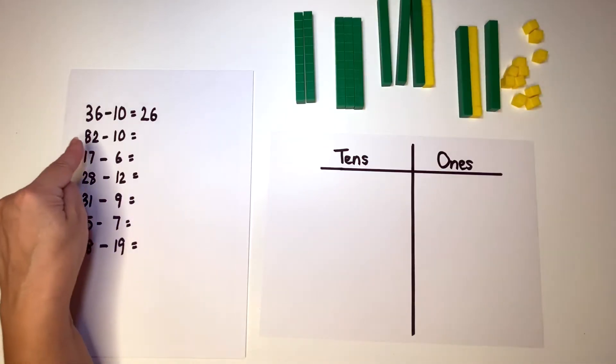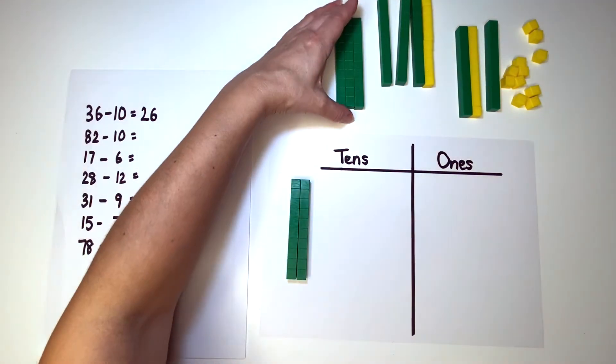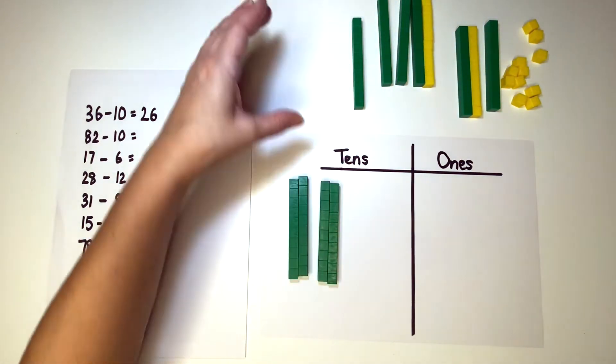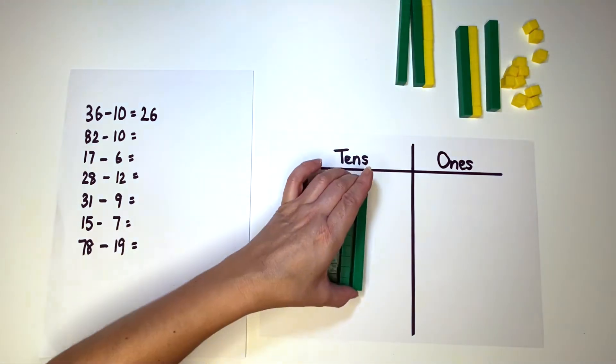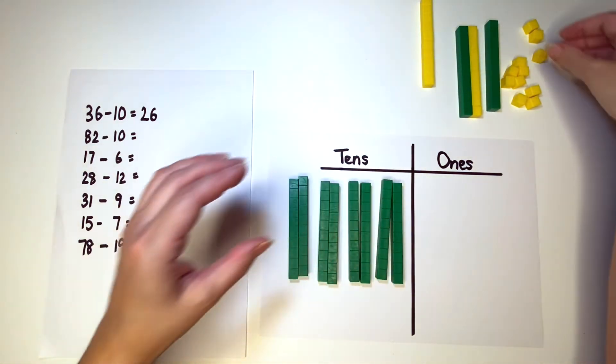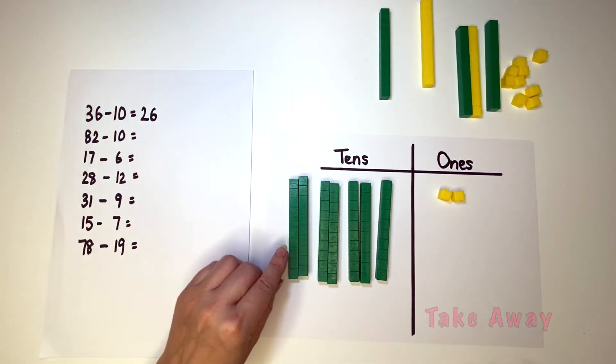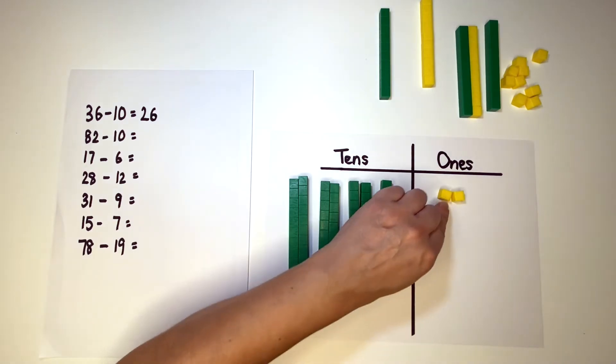My next number sentence is 82 minus ten. So two, four, six, eight, two, minus ten. Take one away and we have two, four, six, seventy-two.